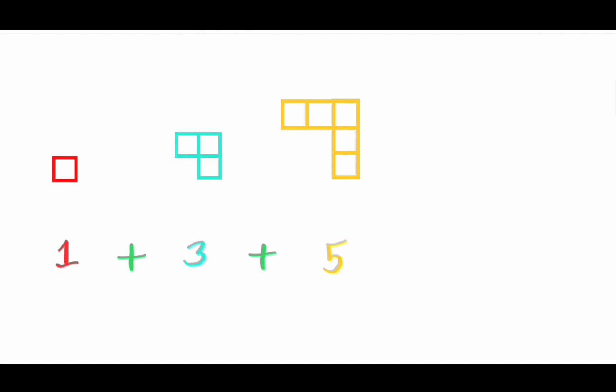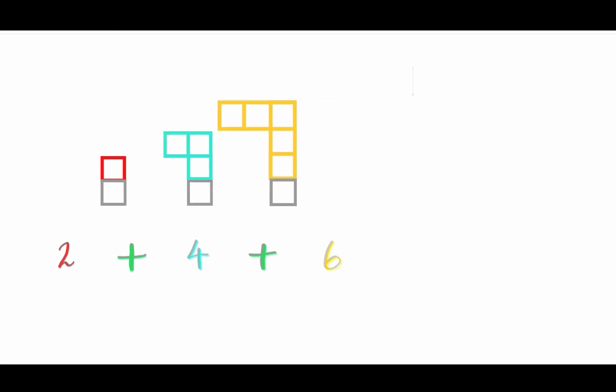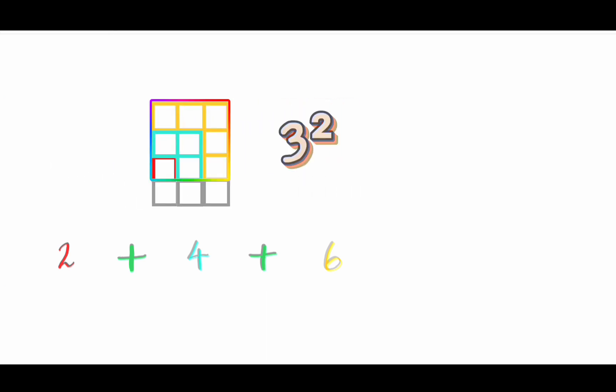Okay, now what if I add 1 block to all of the odd numbers? This 1 becomes 2. This 3 becomes 4. And 5 becomes 6. Now as you can see, these are all first 3 even numbers. And if we combine them like we did before, we get this 3 square plus 3 blocks.